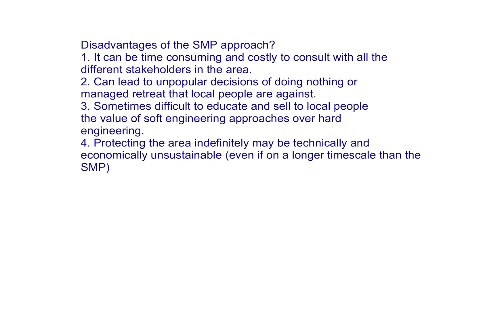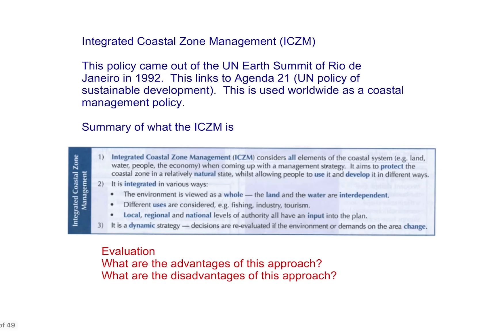Disadvantages of using a shoreline management approach include: it's very time consuming, leads to unpopular decisions — often doing nothing, which can leave local people angry. It can be quite difficult to educate or sell to local people. Protecting the area indefinitely may be economically unsustainable. An alternative is integrated coastal zone management, which came out of the UN Earth Summit in 1992. This involves integrating and viewing the environment as a whole, considering different uses of the area, and involving authority at local, regional, and national levels.